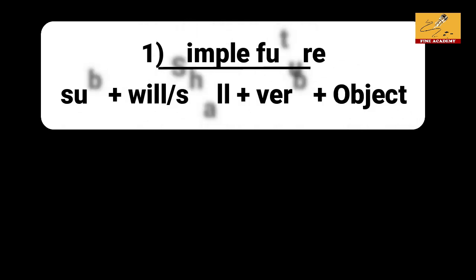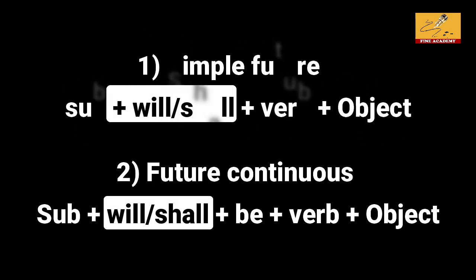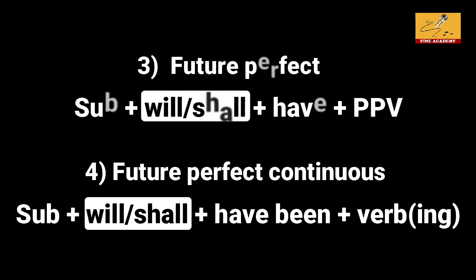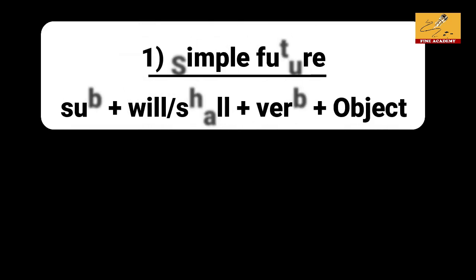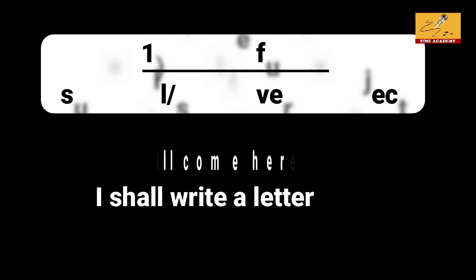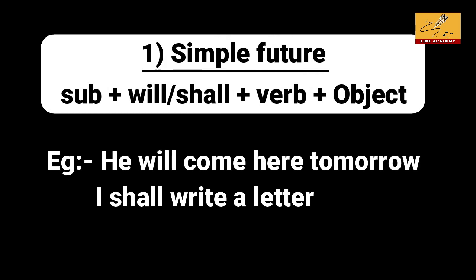Now, the future tense also has 4 types: simple, continuous, perfect, and perfect continuous. Simple future structure: subject plus will or shall plus V1 plus object. For example: 'He will come here tomorrow.' 'I shall write a letter.'